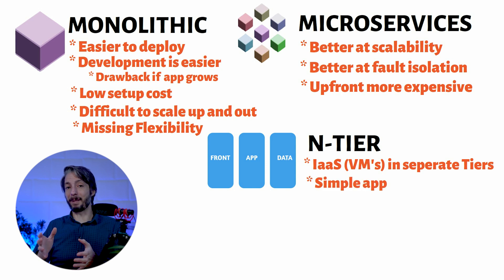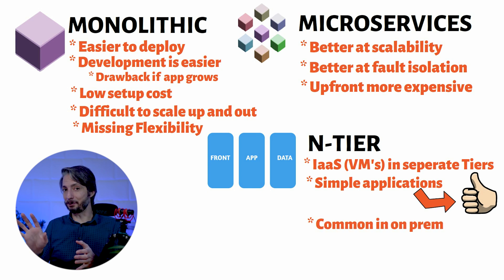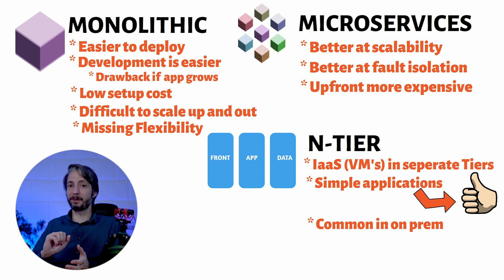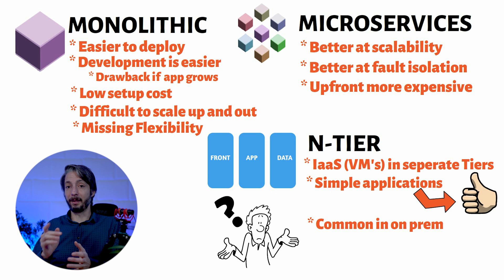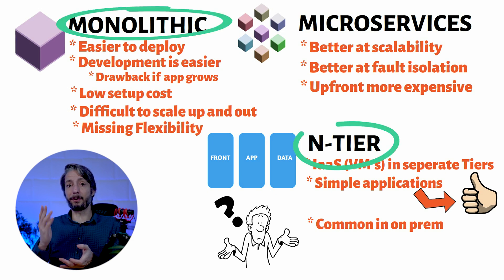N-tier is great for simple web applications and very common in existing on-premise environments, making migration to Azure easier. It depends on many factors before the best application architecture is decided. As an Azure architect, it will be very difficult for you to tell the application developers how to design their application — but don't worry, they will take care of that. You need to know which options are available in Azure and which application architecture is being used: monolithic, N-tier, or microservices.